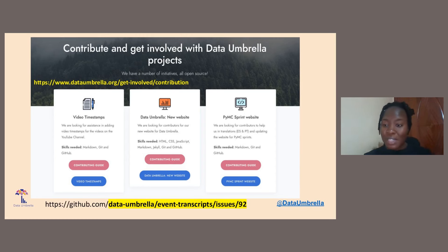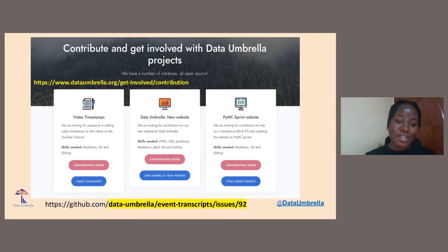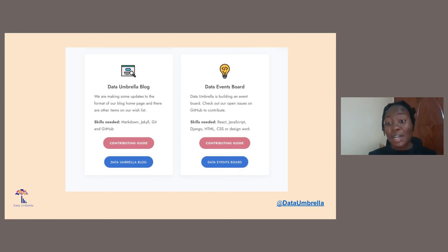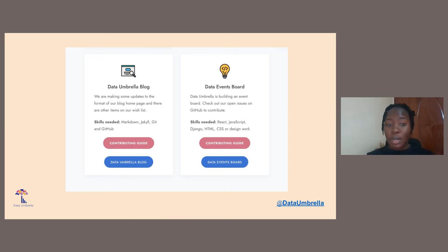We also have a new website that we are working on. If you have any skills in HTML, CSS, and JavaScript and would like to contribute to open source, you can head over to our GitHub page, which is Data Umbrella, and pick an issue on the website. We also have a Data Umbrella blog where we are making some updates to the format. If you have any skills in Markdown, Jekyll, Git and GitHub — or you're a beginner and you're willing to learn — head over to GitHub.com at Data Umbrella and you'll find issues and instructions on how to contribute.